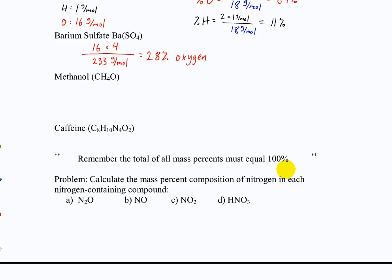Now I want you to think about ranking nitrogen-containing compounds by mass percent of nitrogen from least to most — and try to do it without doing any calculations. Just think about it, estimate it. The reason we're doing it this way is this is the sort of thing that would come up on a multiple choice exam. They might not say 'calculate the mass percent' — they might just say which one has the highest mass percent or rank them. If you can do it by just thinking rather than going through all the numbers, you save yourself a lot of time.